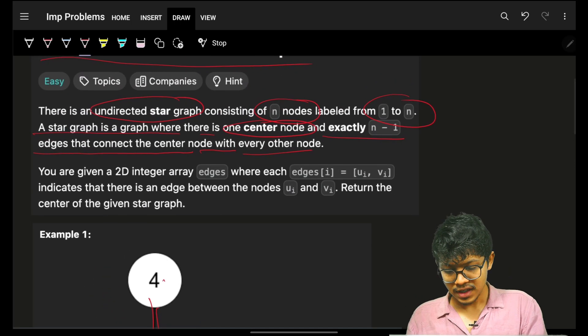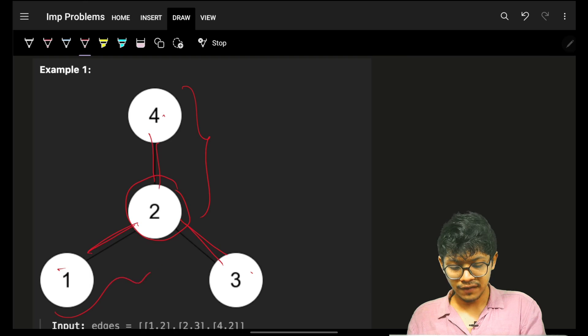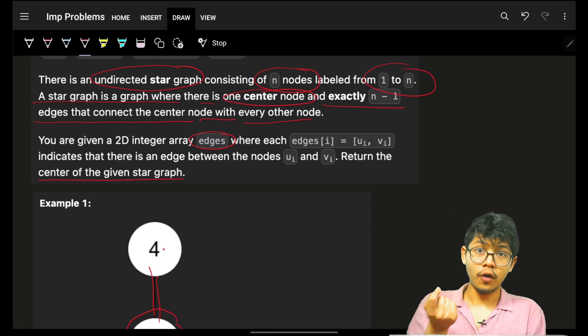I am given a 2D array edges, which means I will be given [2,4], [1,2], [2,3], and so on. I have to find out what is the center of the given star graph.